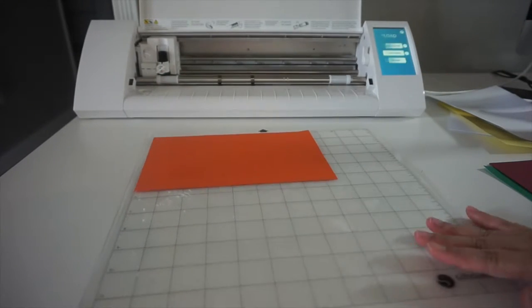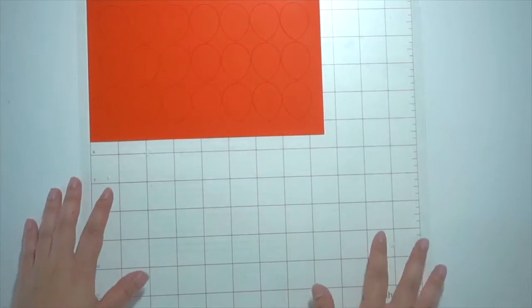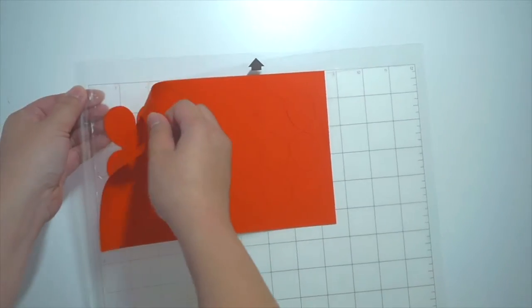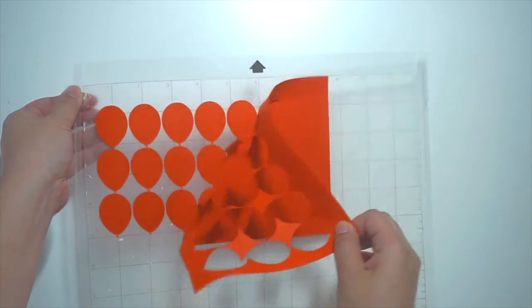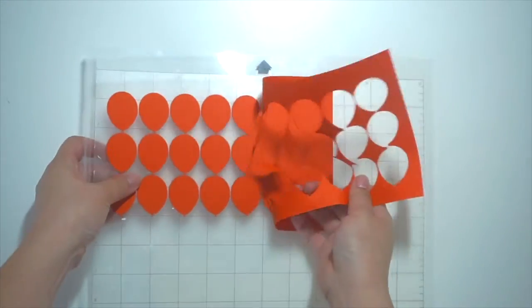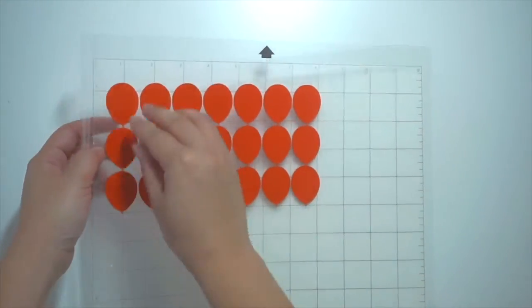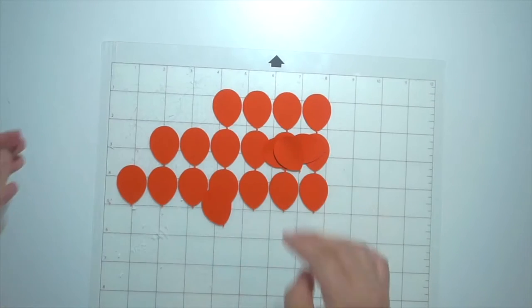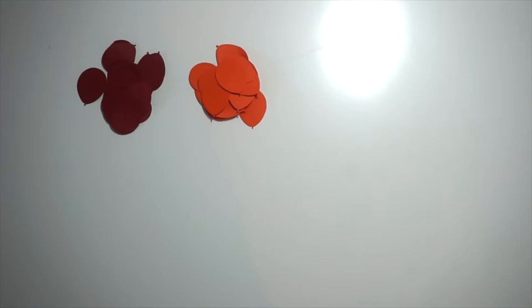I will be using the same cut file with different colored cardstock. I start by slowly peeling off what I cut out, and then I have my balloons ready to go. I don't have to hand cut them all. Once I have all my colored balloons, I will start assembling the care package flaps.